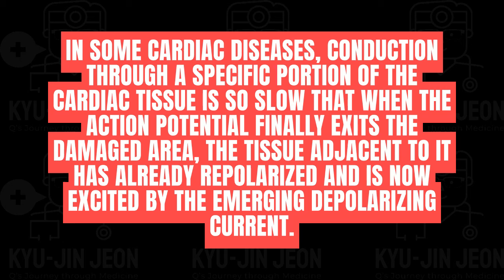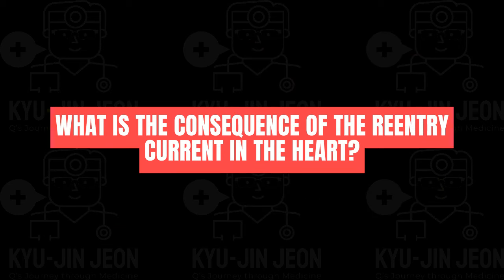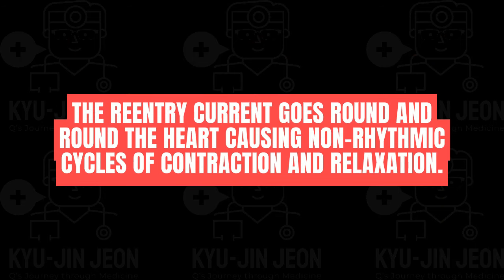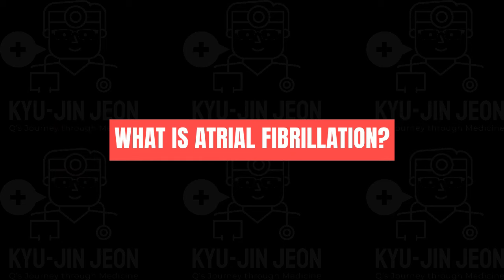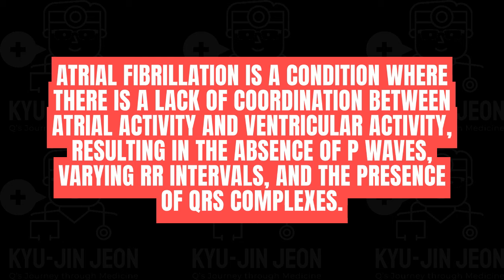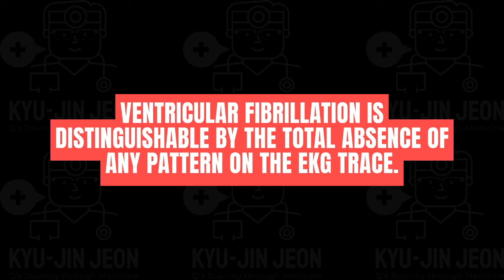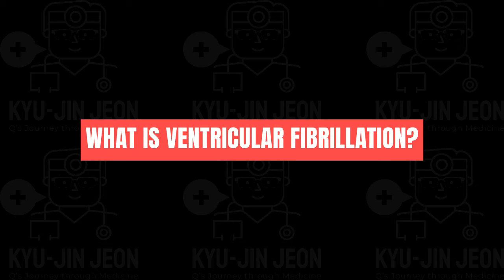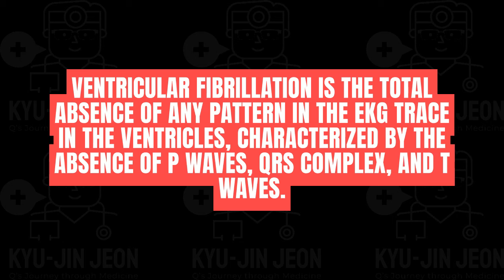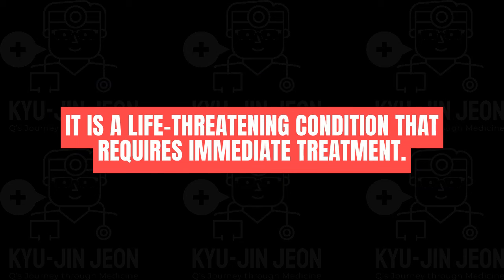In some cardiac diseases, a re-entrant current occurs when conduction through damaged tissue is so slow that adjacent tissue has already repolarized and is re-excited by the emerging depolarizing current, causing non-rhythmic cycles of contraction and relaxation. Atrial fibrillation shows a lack of coordination between atrial and ventricular activity, resulting in absence of P waves, varying R-R intervals, and presence of QRS complexes. Ventricular fibrillation shows total absence of any pattern on the EKG trace — no P waves, QRS complexes, or T waves — and is a life-threatening condition.